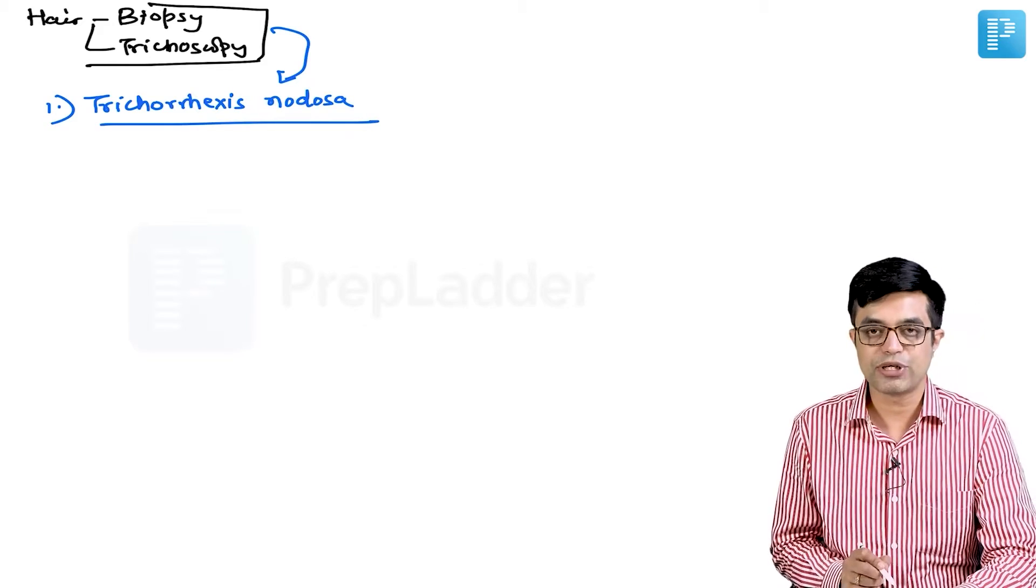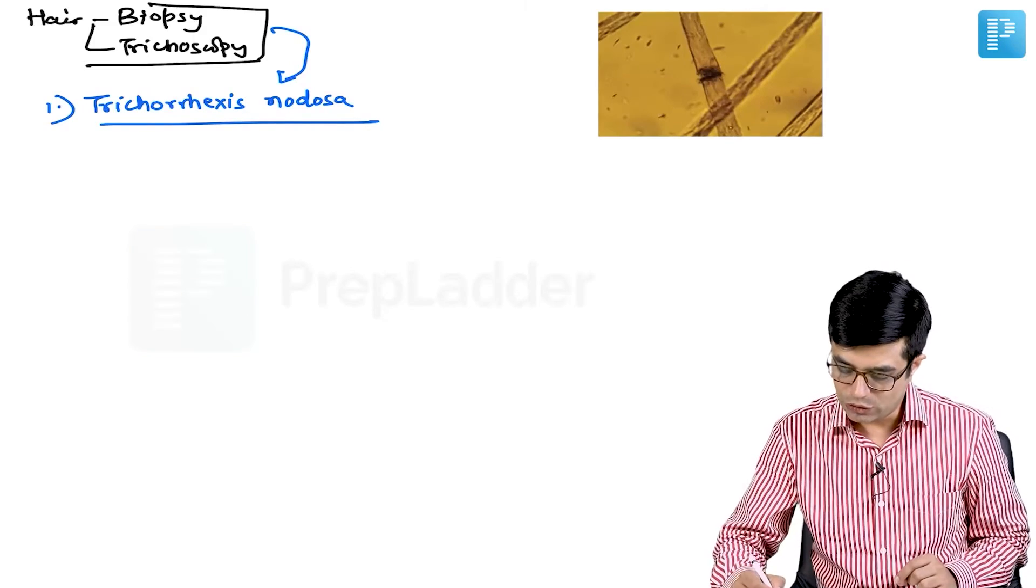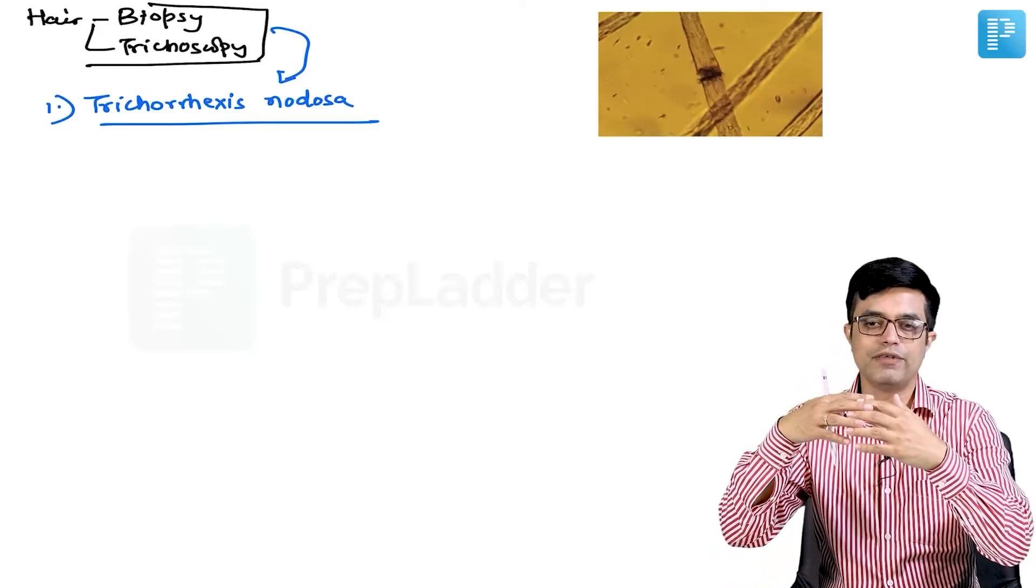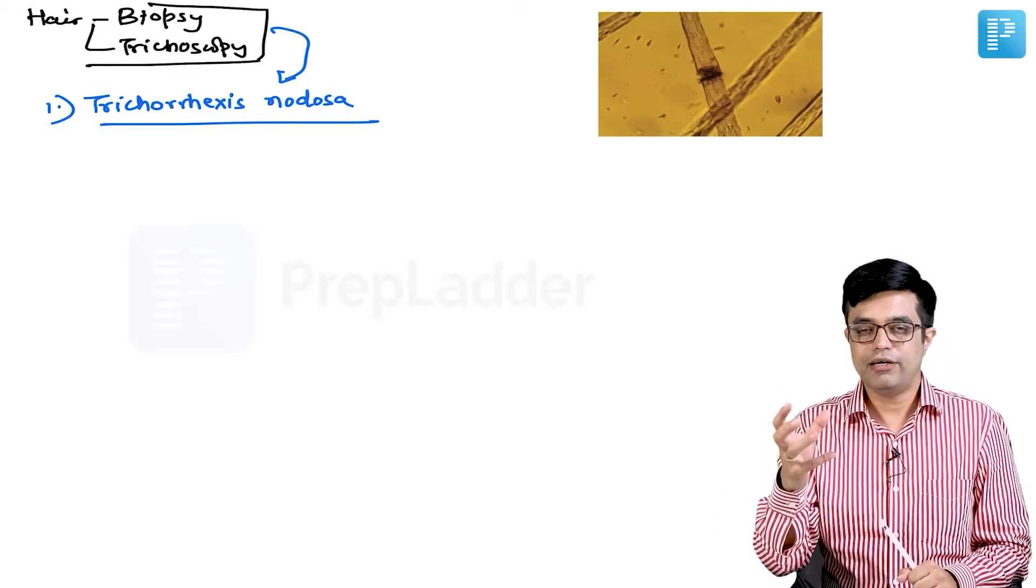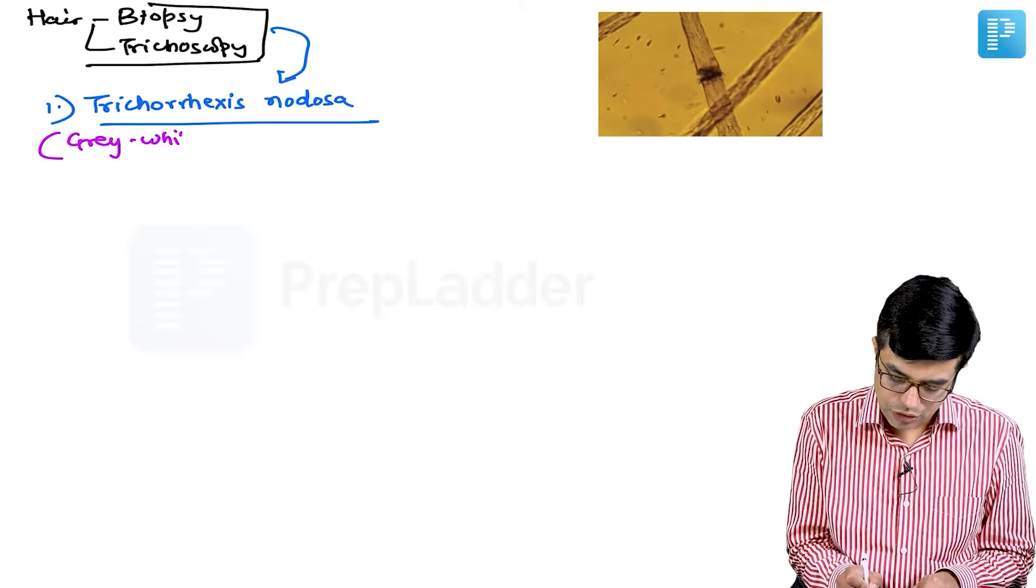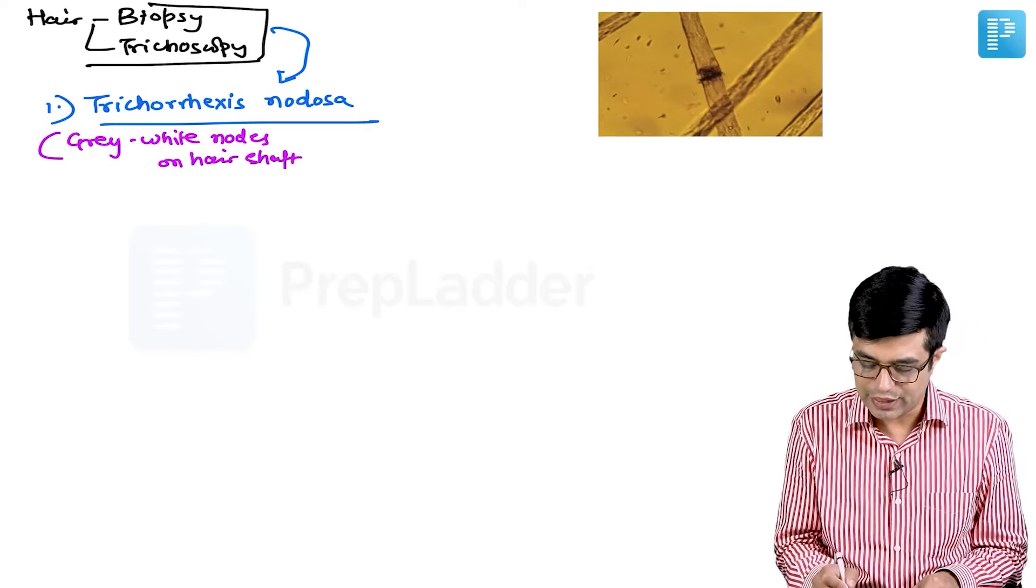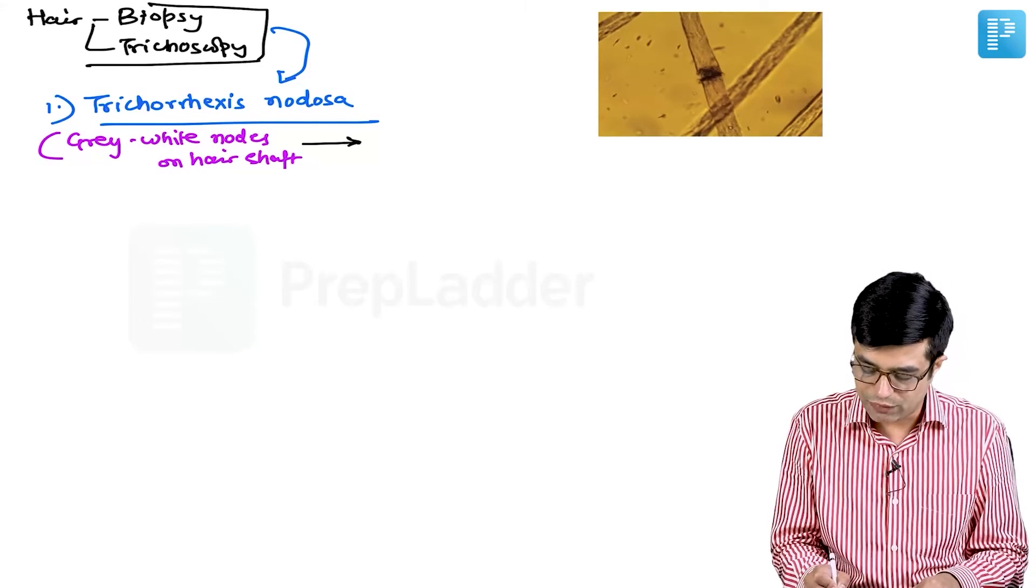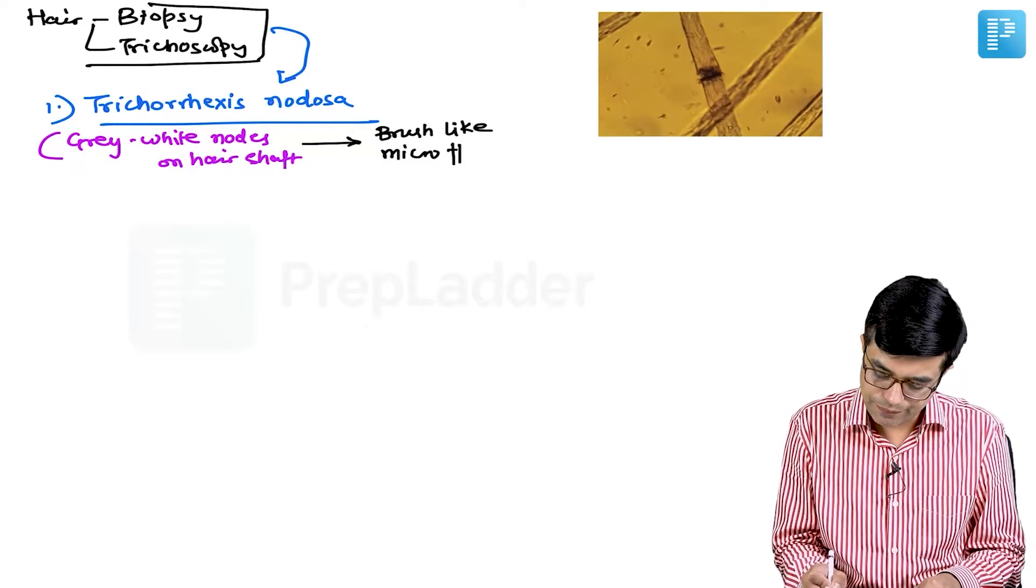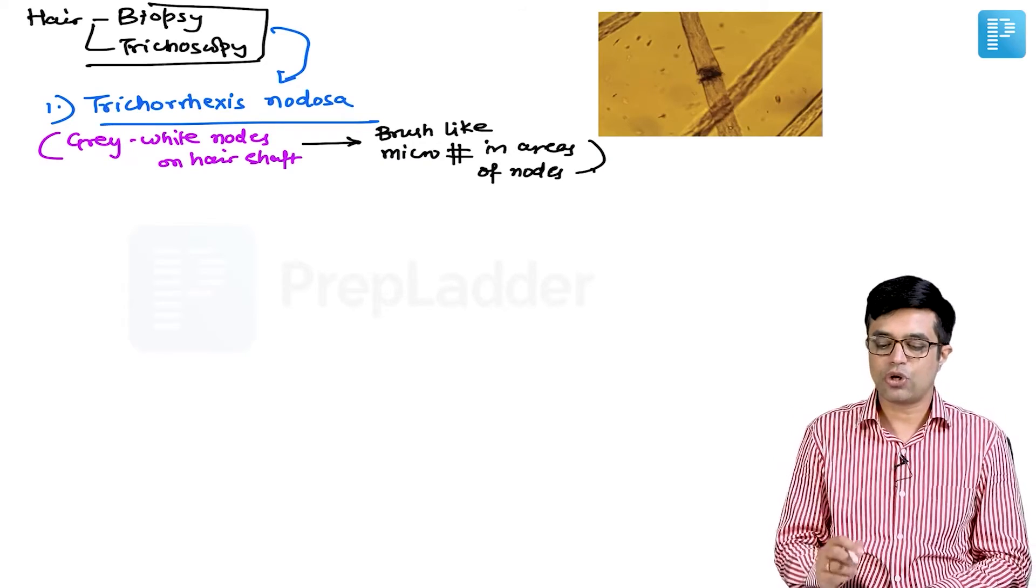In trichorexis nodosa, let me show you a picture. This is how the hair will look like. This is a hair and there will be microscopic fractures in the hair with the two microscopic fragments having a fuzzy brush border, and these brush borders will be interlocking with each other. Nodosa means nodes. If you look at low magnification or even by naked eye, you will find that there will be gray-white nodes on the hair shaft, and this is the site where these hairs will fracture. On microscopy, you will find that there will be brush-like microfractures in areas of these nodes. That pattern is called trichorexis nodosa.